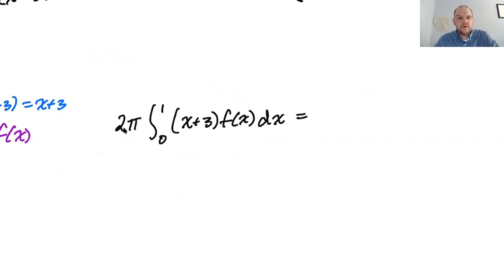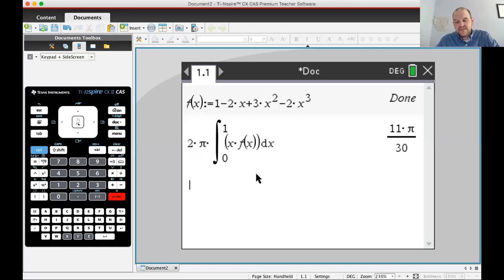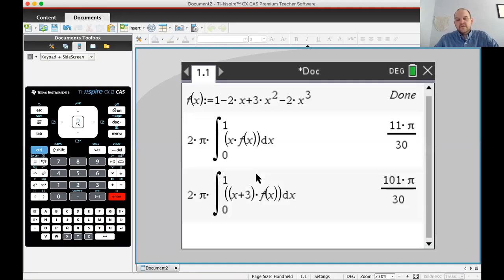And then let's use the calculator to get the answer. So switching over to calculator. So I've already stored the function. You can see it says done. I'm going to do 2π times, so it's x + 3 and then f(x). And we're going from 0 to 1. So there you go. That's going to be 101π/30. I'll write that in. So that's the volume that we get.